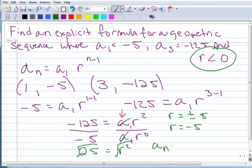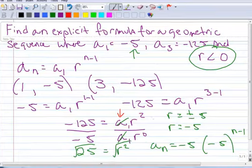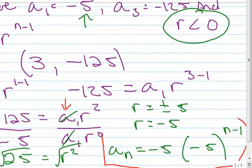So now we're ready to make our formula. a sub n equals a sub 1, so I know a sub 1, that's negative 5, and my r is negative 5 also to the n minus 1. So there's my explicit formula for this geometric sequence when I only knew two terms and I had to calculate the r.